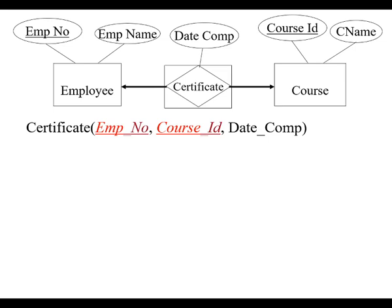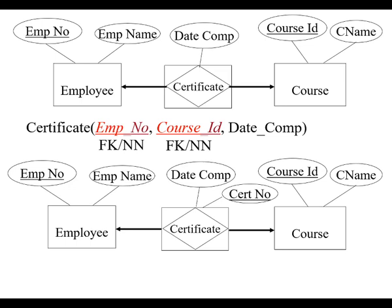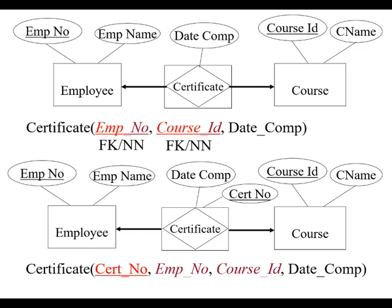Associative entities: employees take courses, and there's a certificate that associates the employee with a course. Employees can take several courses, and one course can have several employees — basically like students and courses. Your primary key for the certificate is a certificate number, but it contains a foreign key to employee number and course ID, because you don't want any certificate that doesn't have an employee, and any certificate should specify a course. You assign an index you can control so people can't dispute which employee took which course, and you might also record when they completed it.